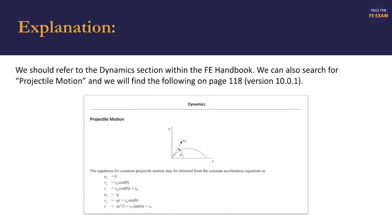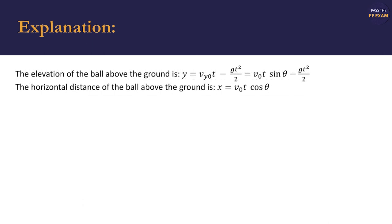We should refer to the dynamic section within the FE handbook. We can also search for something like projectile motion, and we'll find the following on page 118. Referring to page 118, we find the following equations. The elevation of the ball above the ground is Y equals V sub Y zero T minus G T squared over 2 equals V sub zero T sine of theta minus G T squared over 2. Where G is the gravitational constant and T is time. The horizontal distance of the ball above the ground is X equals V sub zero T cosine theta.